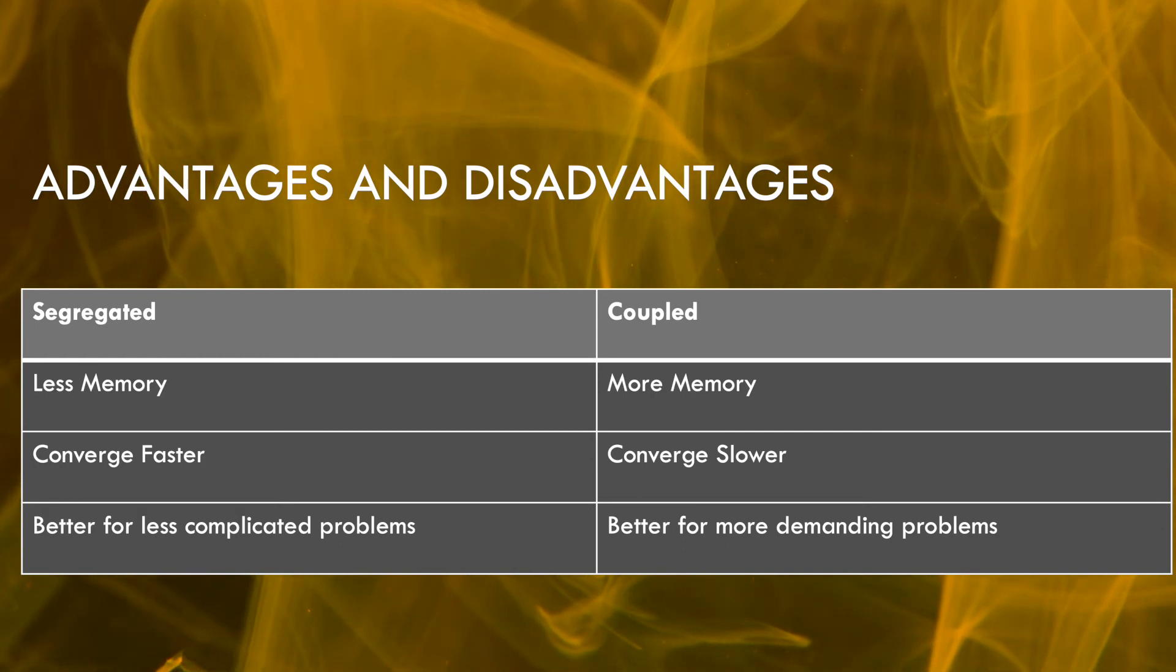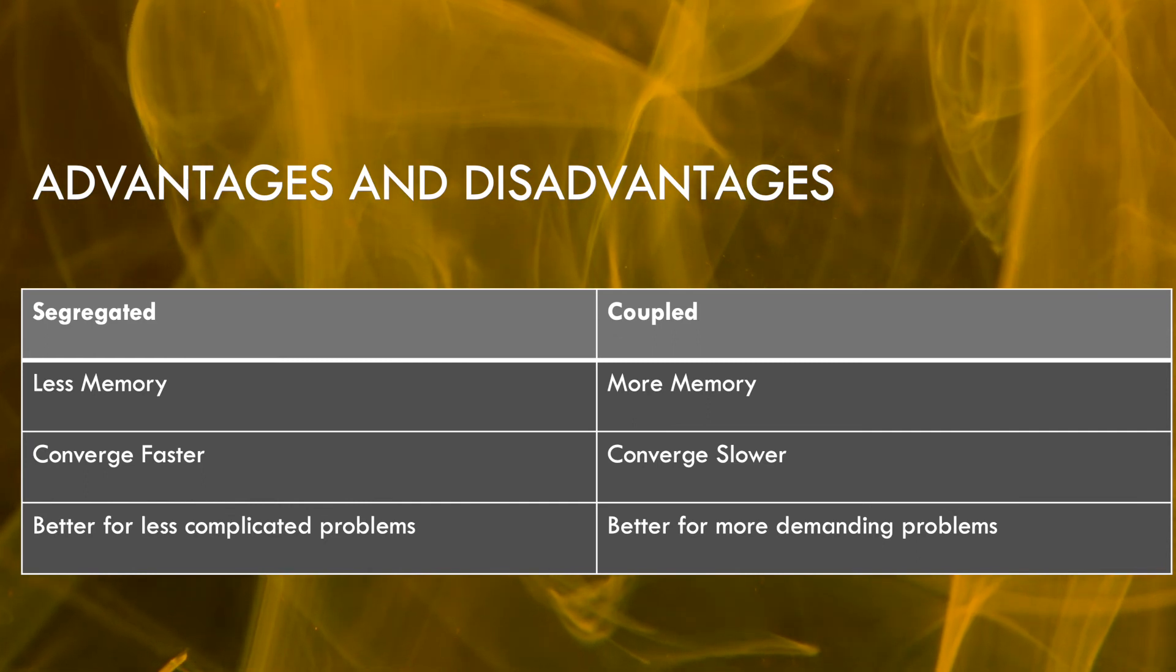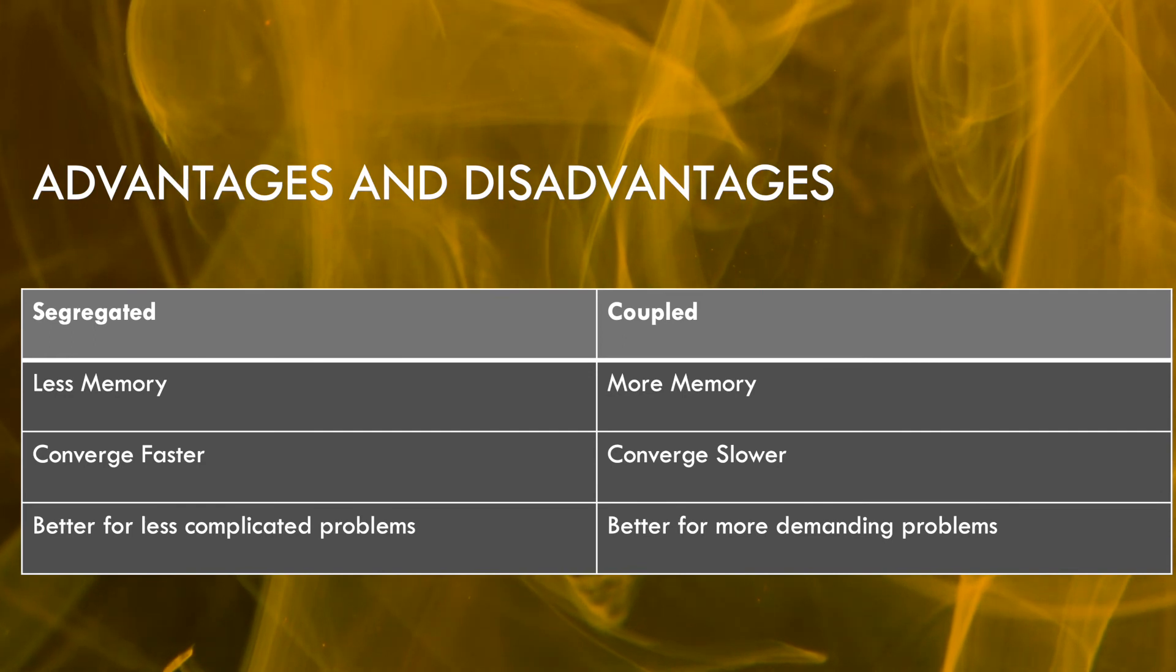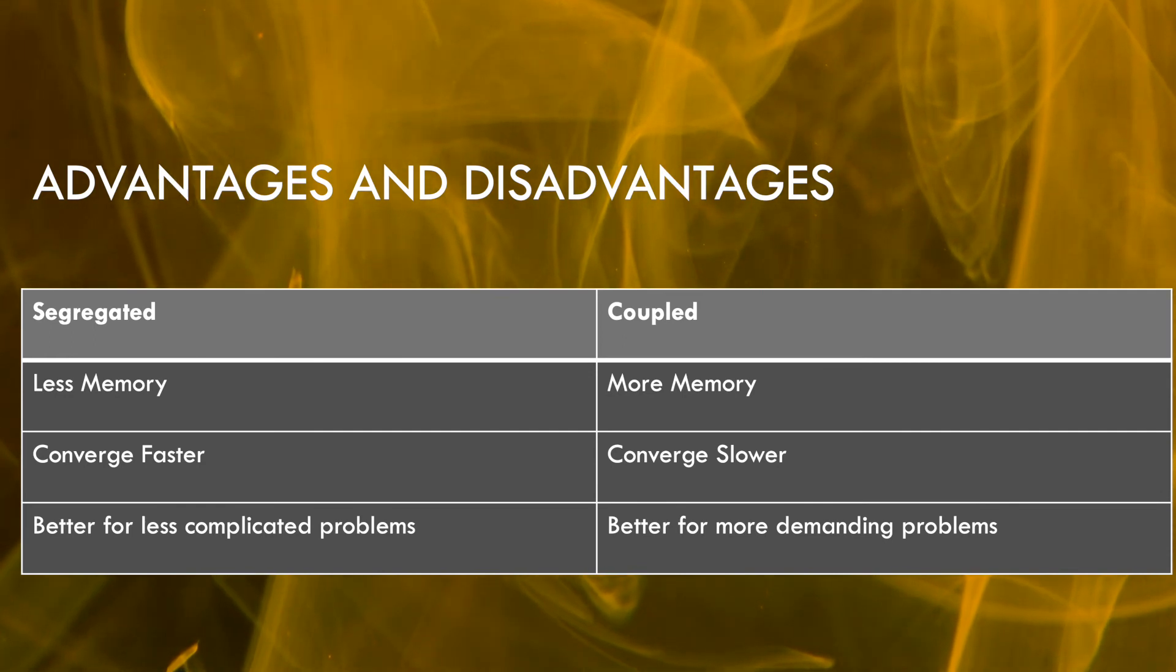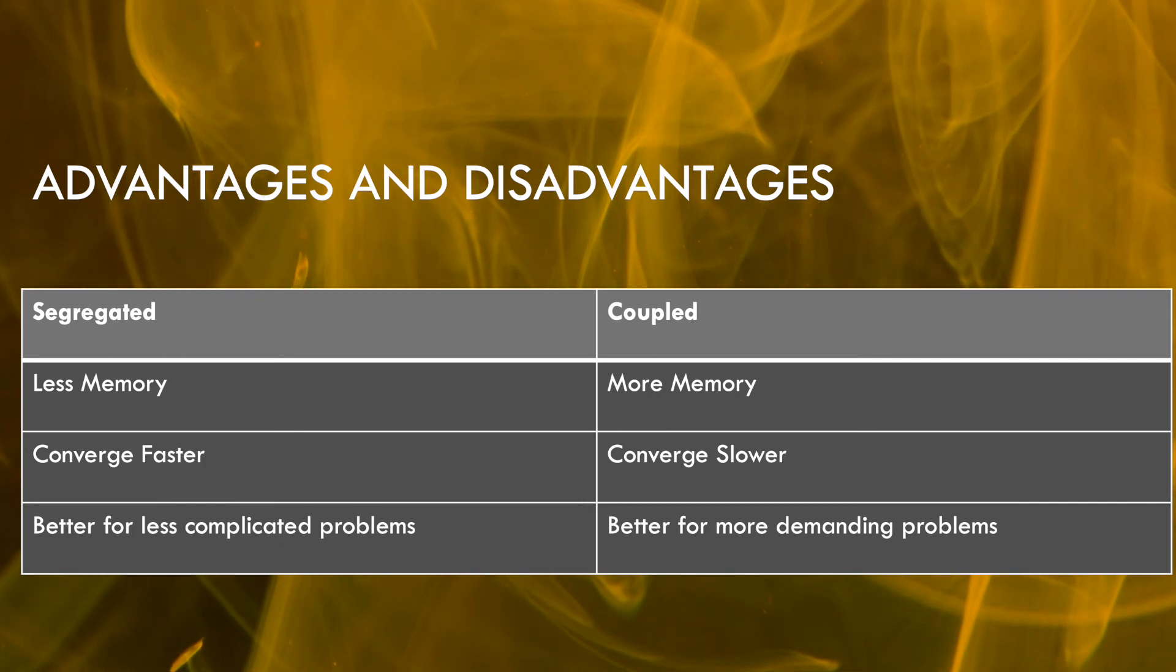It can be said that a segregated solver can solve an iteration faster than a coupled solver, however will need more iterations to reach a converged solution. On the other hand, a coupled solver will be slower for each iteration but the result is likely to be more accurate.